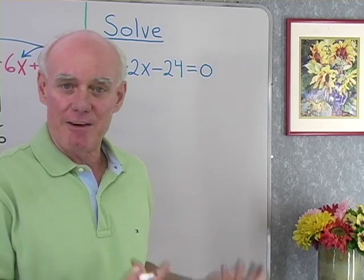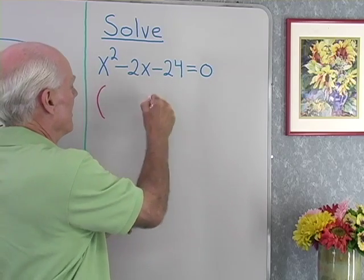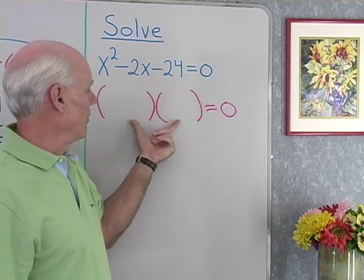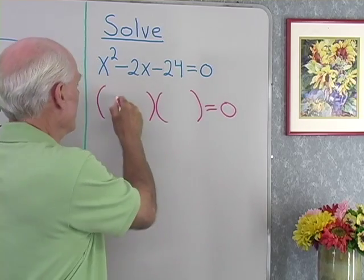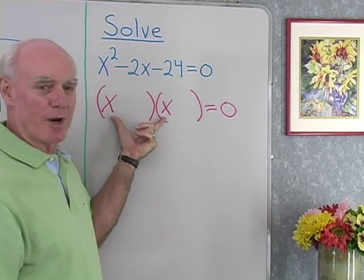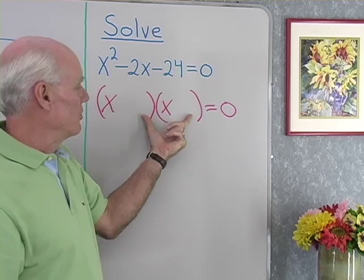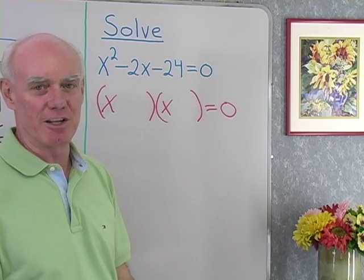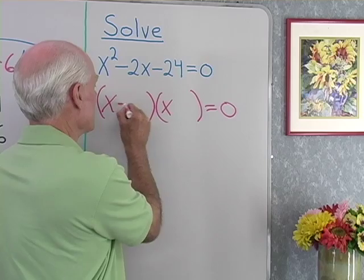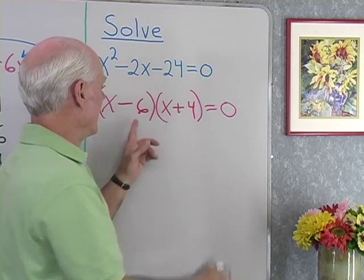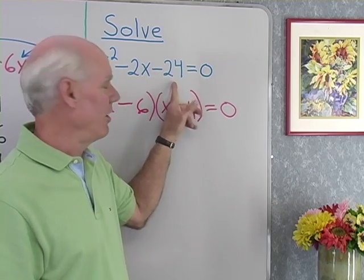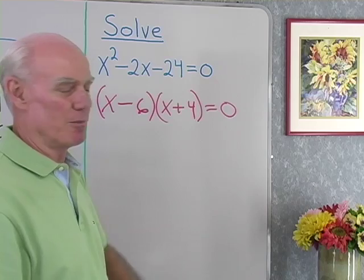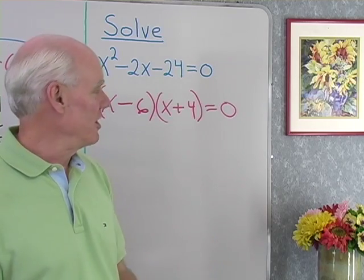To use the zero factor property, we have to factor the left side. We have the trinomial x squared minus 2x minus 24, and I want to factor that into the product of two binomials — x and x — so that x times x gives me x squared. The two numbers I put here have to multiply to give negative 24 and add to give negative 2. How about negative 6 and positive 4? Negative 6 times positive 4 is negative 24, and the middle terms give negative 6x plus 4x, which is negative 2x. So I've succeeded in factoring this.